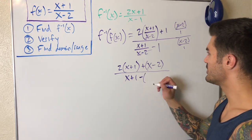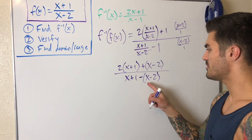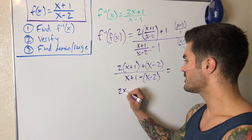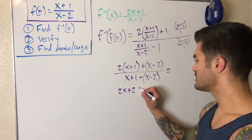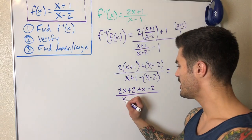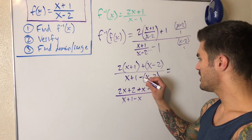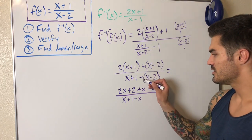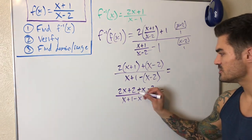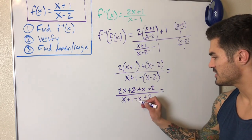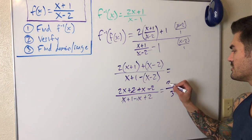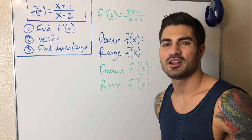Distributing on top: 2x + 2 + x - 2 = 3x. On the bottom, distributing the negative: x + 1 - x + 2. The x and -x cancel, leaving 1 + 2 = 3. So we have 3x/3 = x. Both directions verified — these functions are indeed inverses of each other.